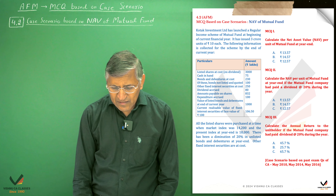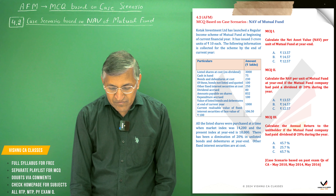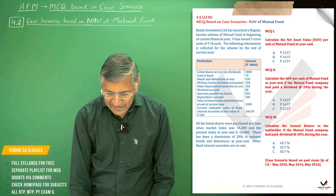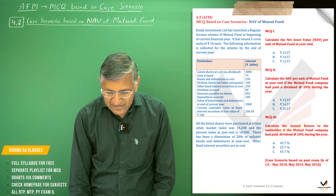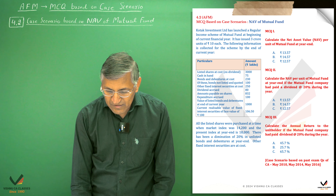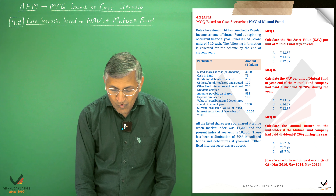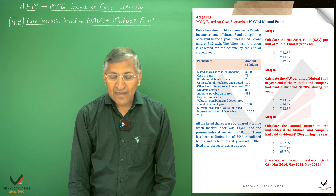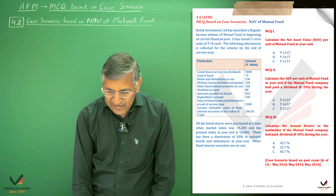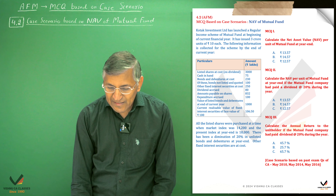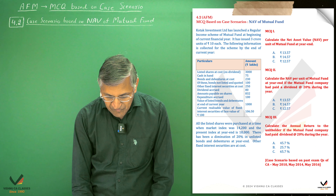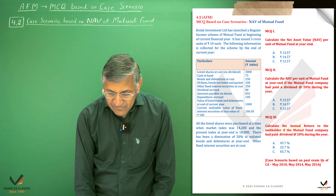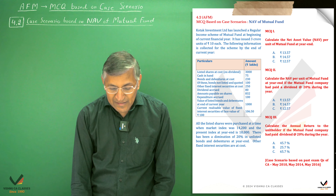Different types of investments are given, with rupees mentioned in lakhs. Listed shares at cost: 3,000 lakhs. Cash in hand balance: 75 lakhs. Bonds and debentures investment: 230 lakhs, of which unlisted bonds are 100 lakhs. Other fixed interest securities at cost: 250 lakhs. Dividend accrued: 80 lakhs. Amount payable on shares: 832 lakhs. Expenditure accrued: 100 lakhs.